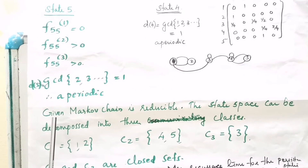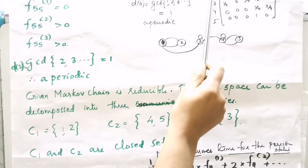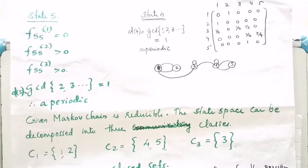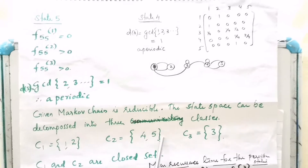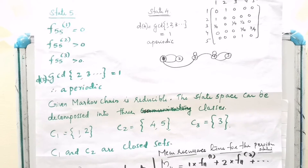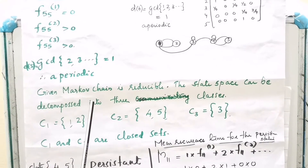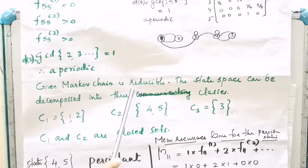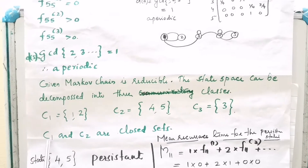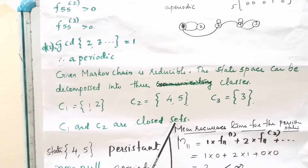The given Markov chain is reducible. Transitions 1 to 2 and 2 to 1 are possible, and states {4, 5} and {3} form separate classes. From the figure it is clear that C1 and C2 are closed sets.